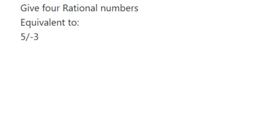So we're going to use multiplication. We can multiply with any number, but whichever number you select, you have to multiply that same number in both the numerator and denominator. Let's find the four rational numbers. I'm going to take small numbers because they are easy to multiply.